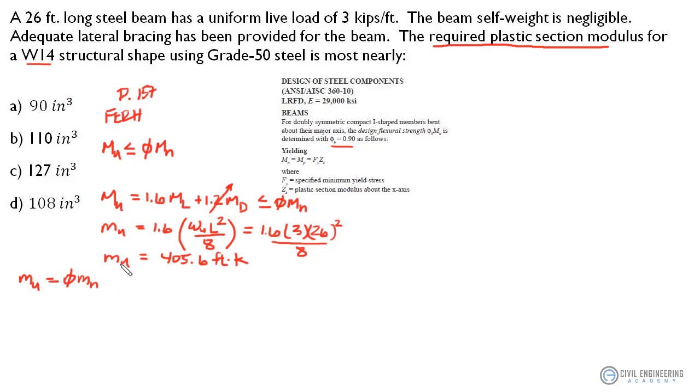So if we say manipulating this we could say that M sub N equals the ultimate moment divided by our resistance or our phi factor and that we could relate that now to M sub P which is what we're after and we could say that equals F sub Y or the yield strength of the steel times our plastic section modulus. So let's use that relationship now to figure out what the required plastic section modulus is going to be.